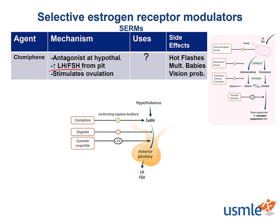This stimulates ovulation, making clomiphene a good first-line treatment for infertility. Testable side effects include hot flashes, ovarian enlargement, multiple simultaneous pregnancies, and vision problems.